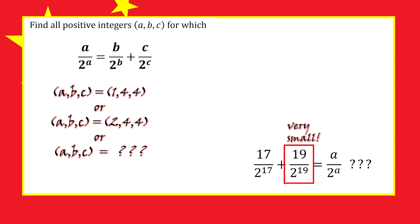If you add 19 over 2 to the 19 plus 18 over 2 to the 18, you don't even come close to 17 over 2 to the 17. And you're not going to get any numbers larger than that, so it's not possible for this sum to have the form a over 2 to the power a.